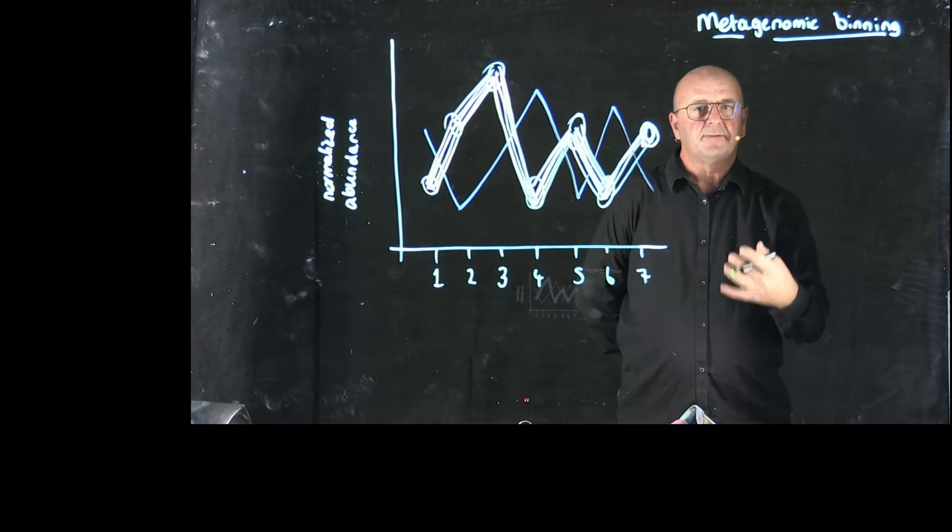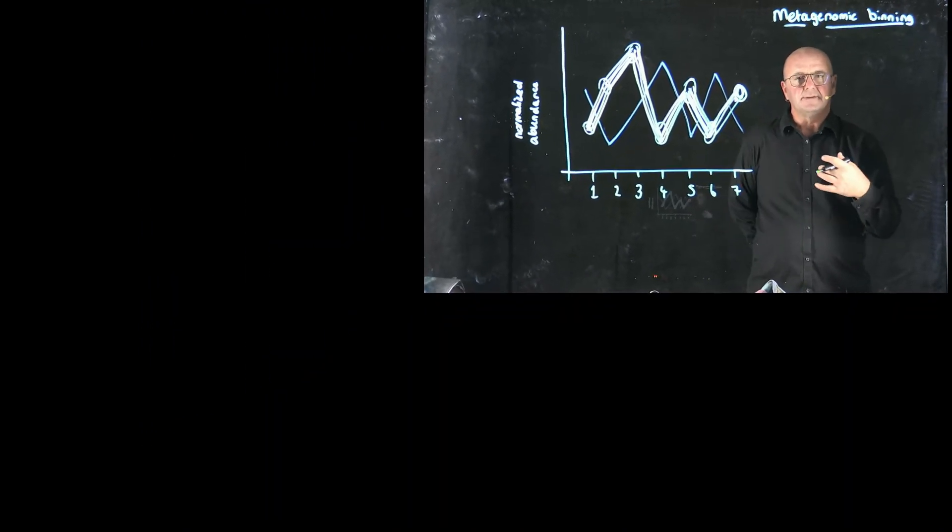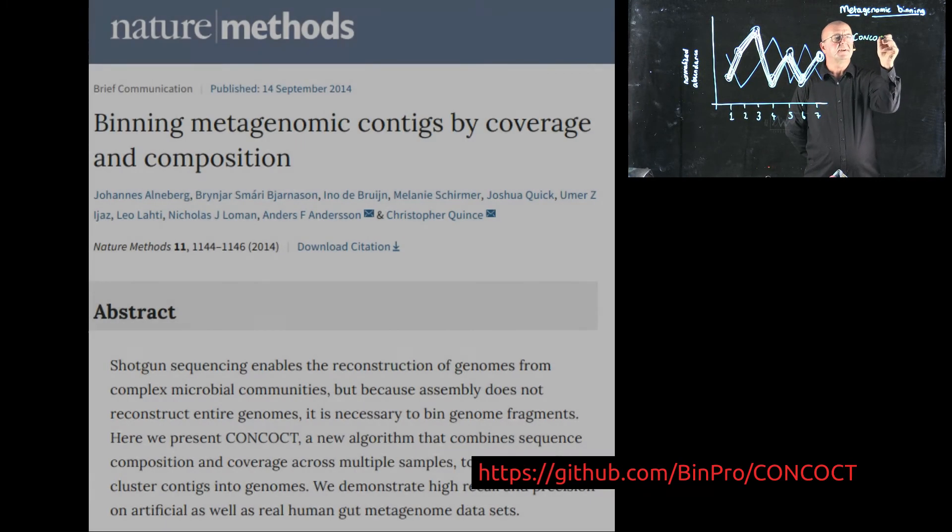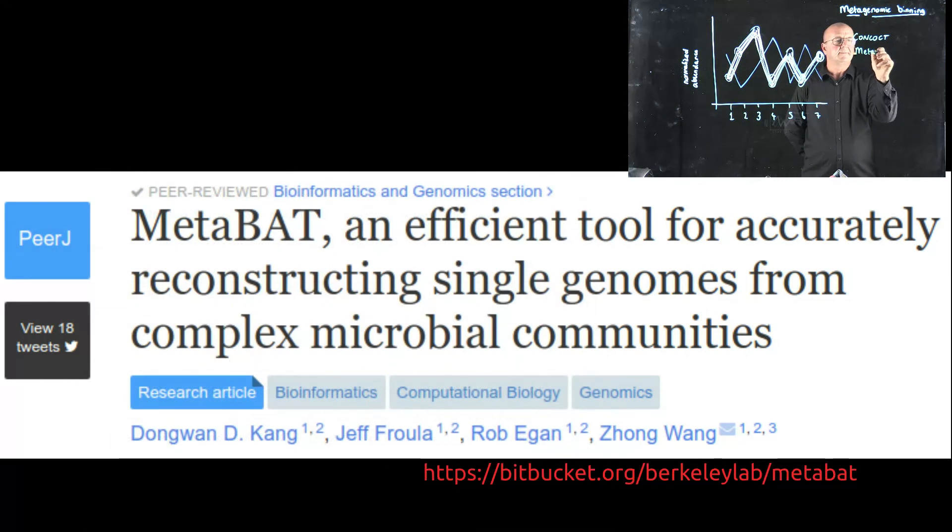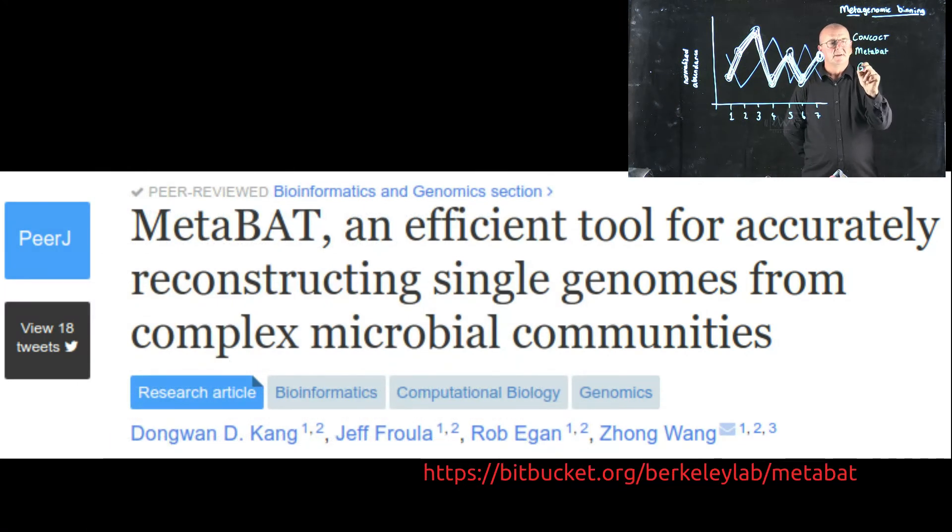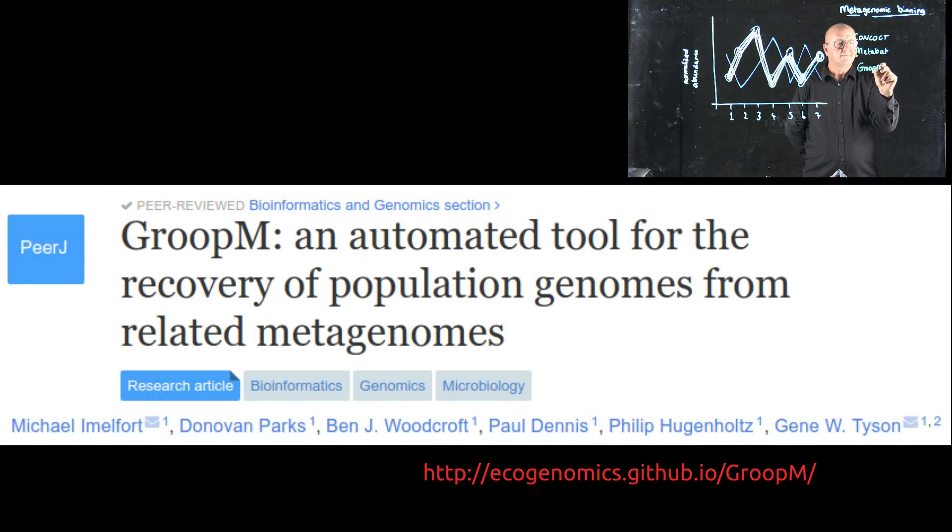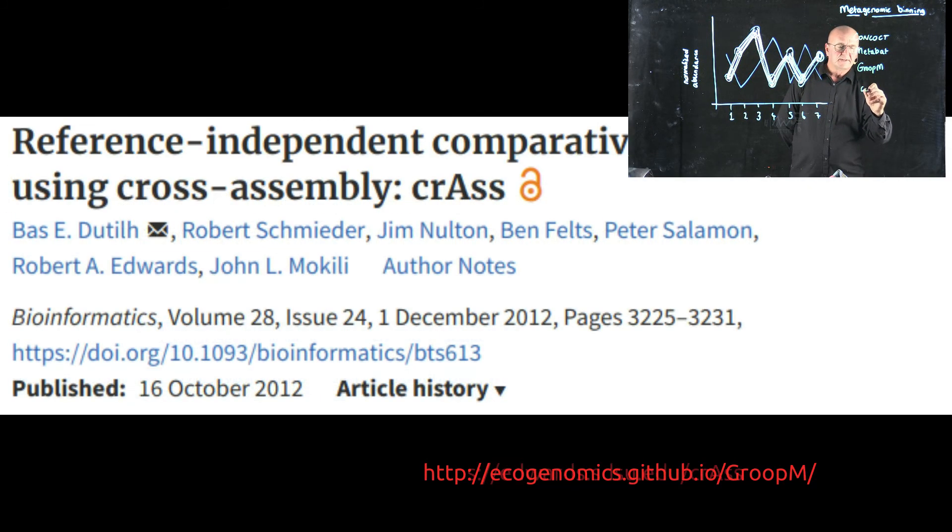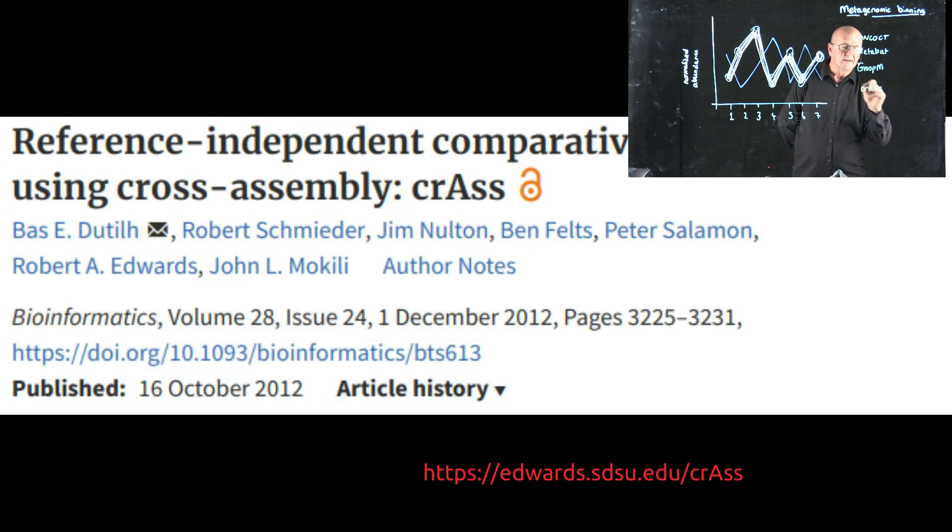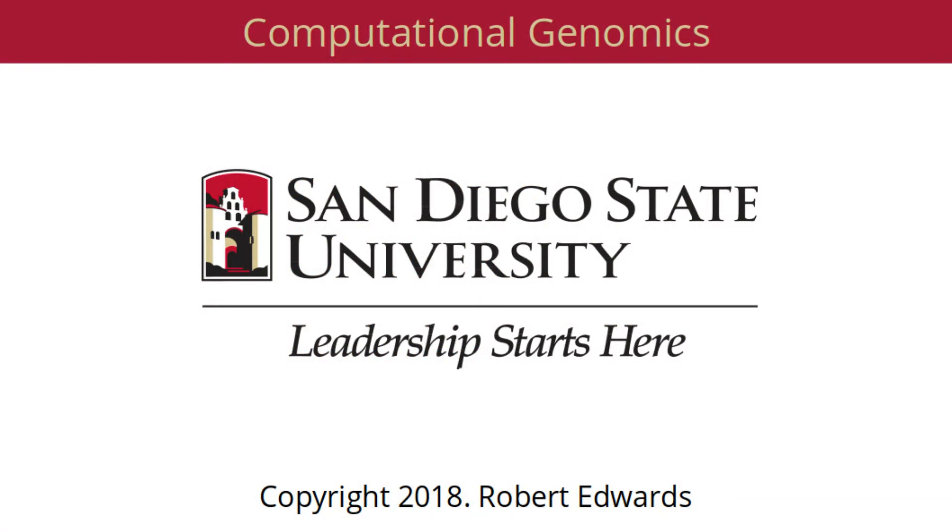So nowadays, there are several robust tools that we use for metagenomic binning. Some of the ones that we use frequently are concoct, metabat, groupum, and, of course, the one that we developed that we love, which is called cross-assembly or CRAS. And we use that to identify the CRAS phage. So now we're going to take a look at the CRAS.